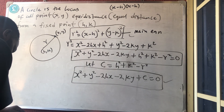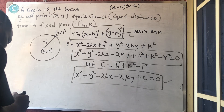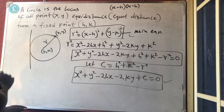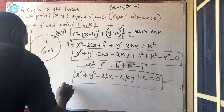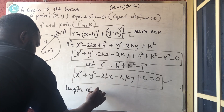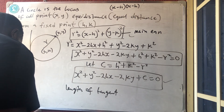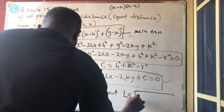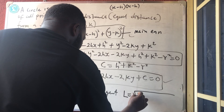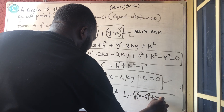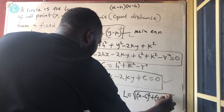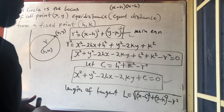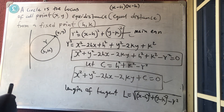The center is h comma k and the radius is r. They can also ask you to find the length of tangent. The length of tangent L equals the square root of x minus h all squared plus y minus k all squared minus r squared. These are the key things they can ask you in circles.